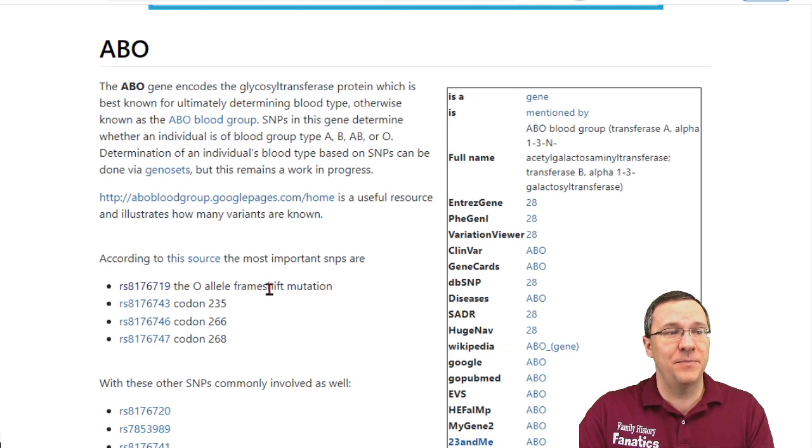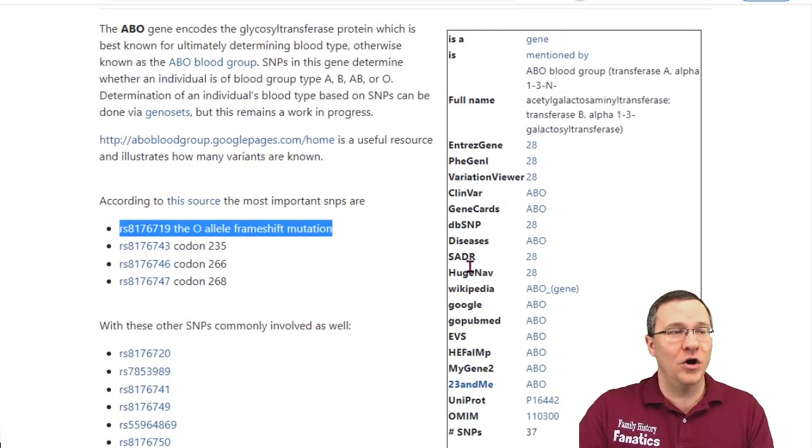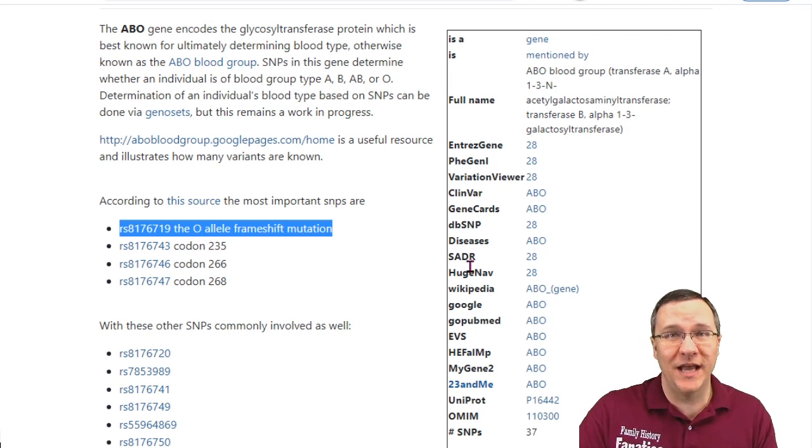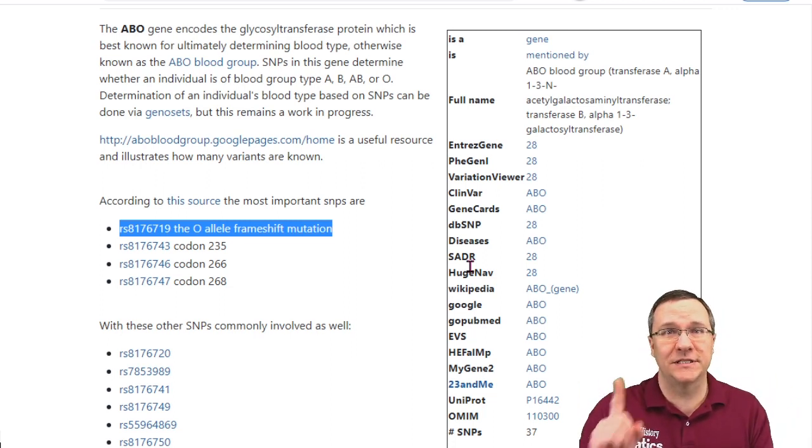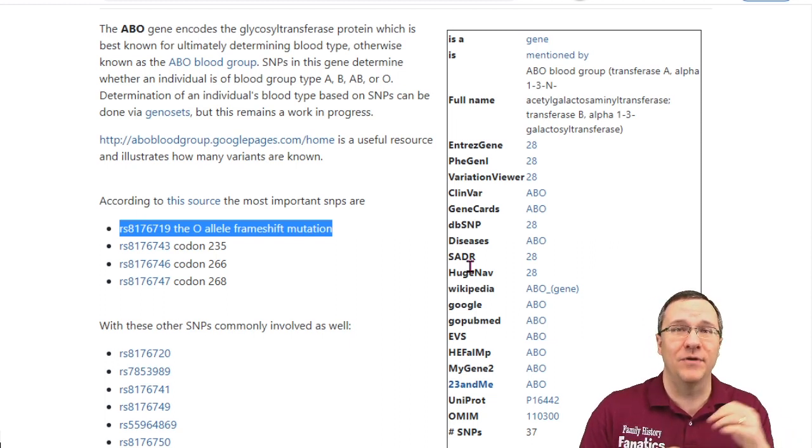As we read around about ABO, we actually see there is this SNP RS8176719. That is what determines the change from blood type A to blood type O. It's basically a single SNP that if it has been deleted, you are going to have O on that gene as opposed to A.